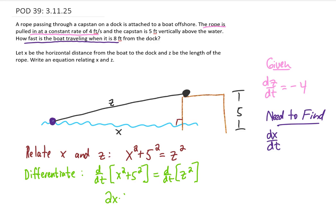And that now is the derivative of our first term. The derivative of 5 squared, which is just 25, is just 0. And the derivative of z squared is very similar to the derivative of x squared.